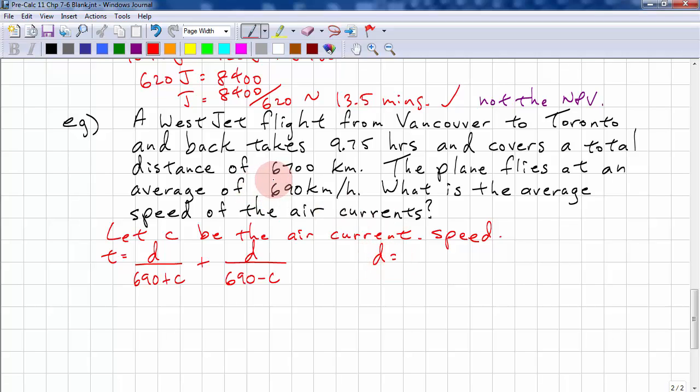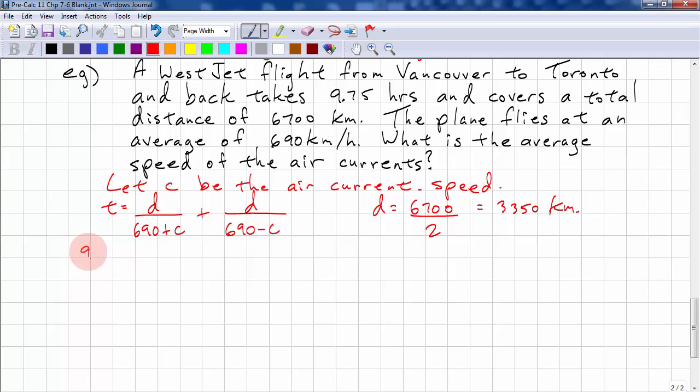The total distance is 6700 kilometers, so we need to divide that by 2 for each trip. So this is 3350 kilometers. We know our time is 9.75, so we have 3350 over 690 plus C, and 3350 back the other way, over 690 minus C.